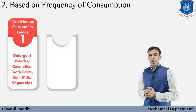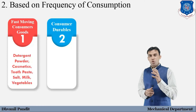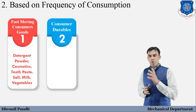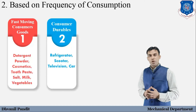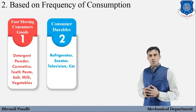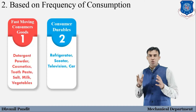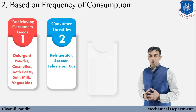Another sub-type under frequency of consumption is consumer durables. Consumer durables are products whose useful life is much longer. Remember the key phrase: useful life is much more. Examples include refrigerators, scooters, televisions, and cars. Because these products have a very long useful lifespan, we call them consumer durables.